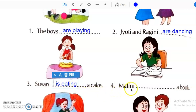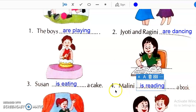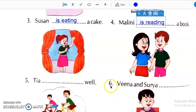Then, next one Malini dash a book. Malini kya kar rahi hai? She is reading a book. We can see in the picture that she is reading. So, we have to write is reading.